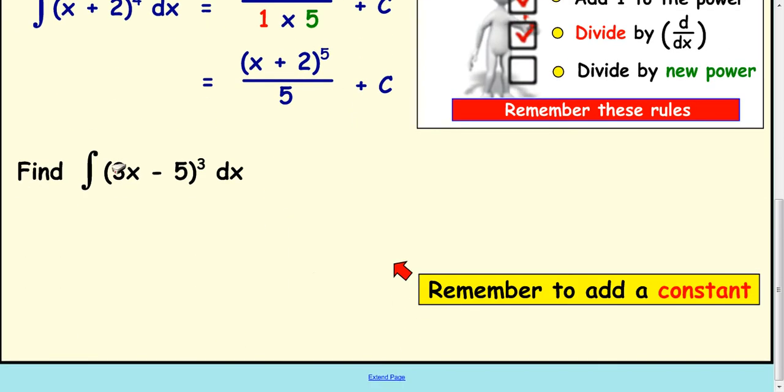Next example here. Integrate 3x take away 5 cubed with respect to x. Same idea, rewrite the bracket and increase the power by 1 first.